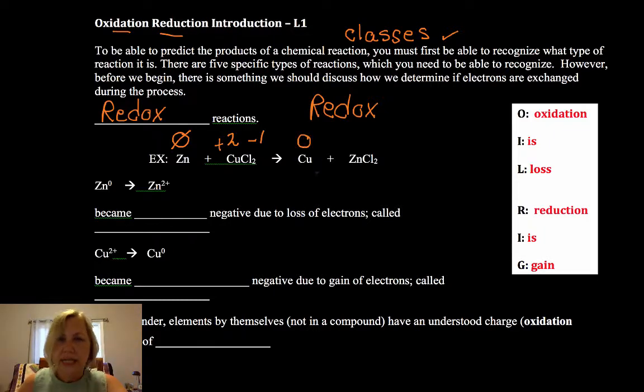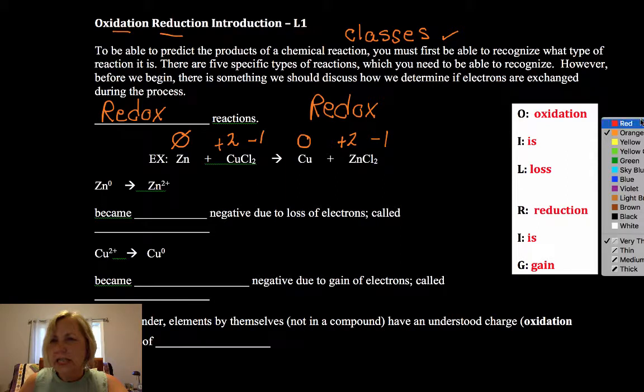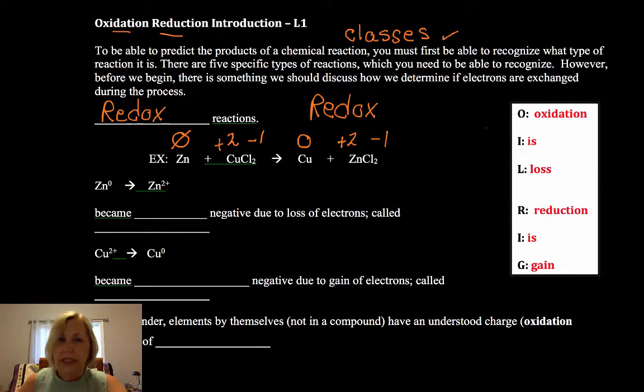On the product side, copper is zero. Zinc in a compound is always plus two and the chlorine is negative one. So the first step when we're evaluating these is to evaluate their oxidation numbers.